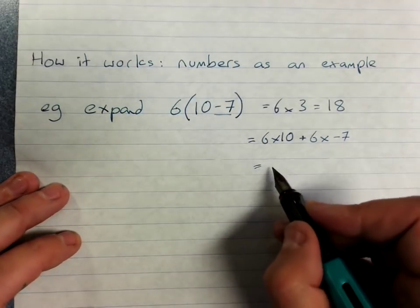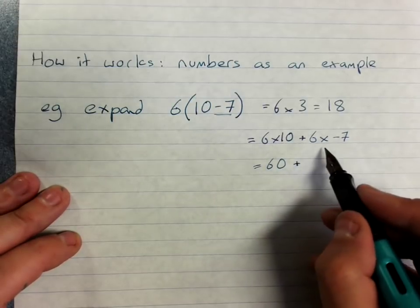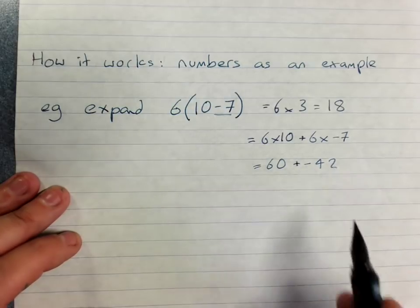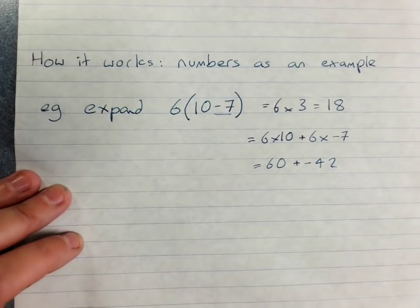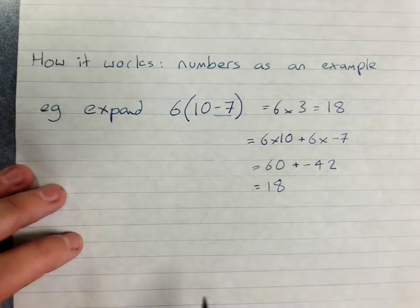6 times 10 is 60, plus 6 times negative 7 is minus 42. 60 take away 42 is 18, we've got the same answer. Let me pick one that's got easier numbers.